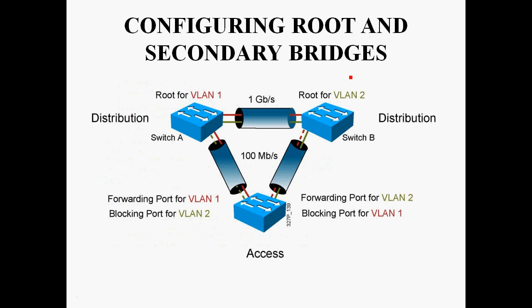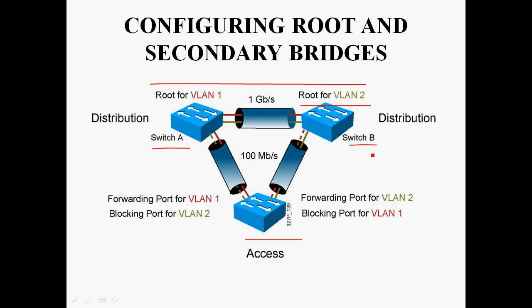Configuring Root and Secondary Bridge. In this topology, three switches are connected in a triangle: Switch A, Switch B, and Switch C. In Switch A we create VLAN 1 and 2, Switch B we create VLAN 1 and 2, and Switch C we create VLAN 1 and 2. Switch A: VLAN 1 is root bridge and VLAN 2 is non-root bridge. Switch B: VLAN 2 is root bridge and VLAN 1 is non-root bridge. Switch C: both VLAN 1 and 2 are non-root bridge. In Switch A, we assign VLAN 1 as root bridge.